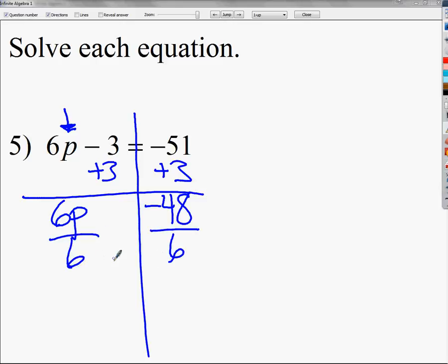It's really easy to drop signs. The more steps you write out, I'm not going to lie, the easier they are to get right more often. And then we made it to finish it and we divided by 6 on both sides and we got negative 8. I think we have one more to do and then that is it.